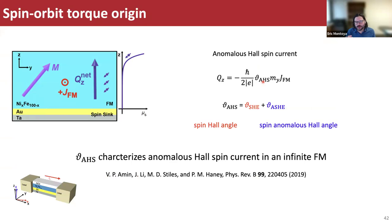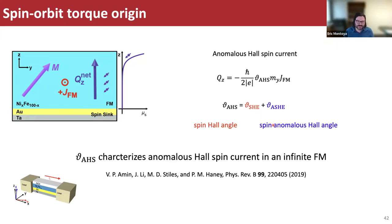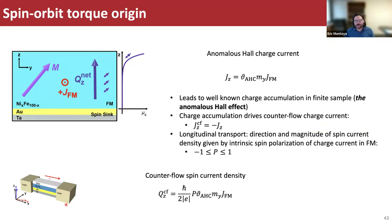In the literature, the anomalous hall spin angle is broken down into two components: the spin hall angle and the spin anomalous hall angle. These have the same symmetry, so we are only sensitive to their algebraic sum. In a finite sample, the anomalous hall charge current leads to charge accumulation — this is the well-known anomalous hall effect. In the steady state, this charge accumulation drives a counterflow charge current of equal magnitude but opposite direction. This backflow charge current, being longitudinal transport in a ferromagnet, is then spin-polarized with magnitude given by the intrinsic polarization P.